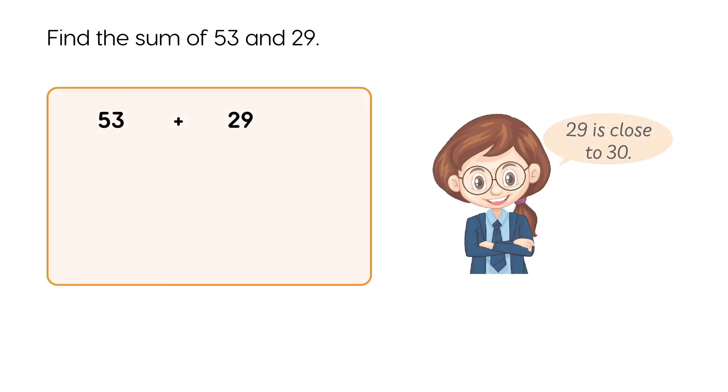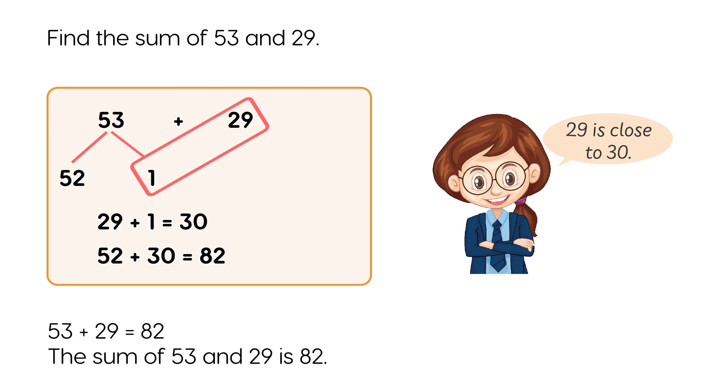Find the sum of 53 and 29. 29 plus 1 equals 30. 52 plus 30 equals 82. 53 plus 29 equals 82. The sum of 53 and 29 is 82.